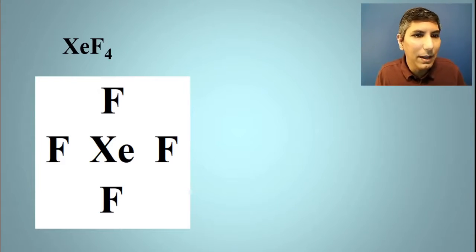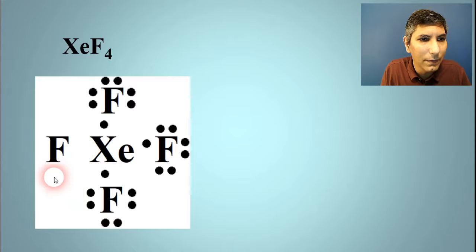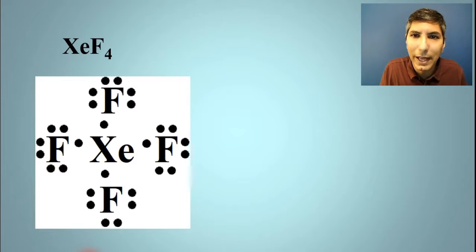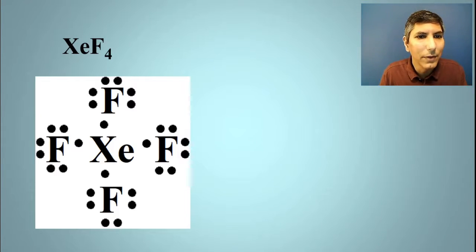We're going to put xenon in the middle with the four fluorine atoms around. How many valence electrons does each fluorine get? It's in group 17, so I'll put seven dots around each of those. And we always try to start with the outside and work our way in. That seems to reduce errors. Also try to pair these electrons up as much as you can.